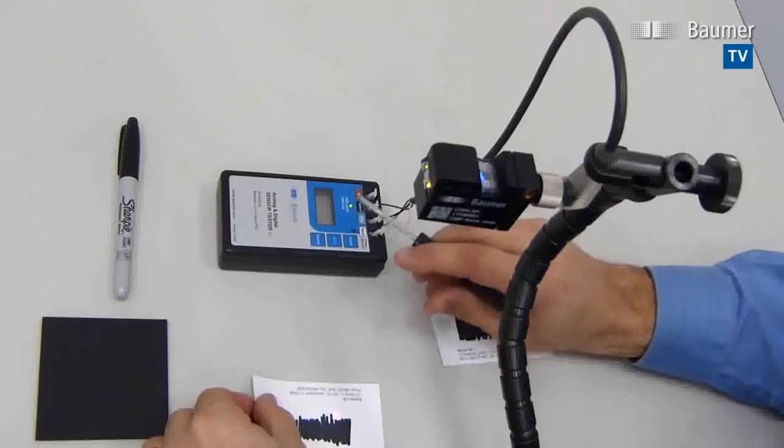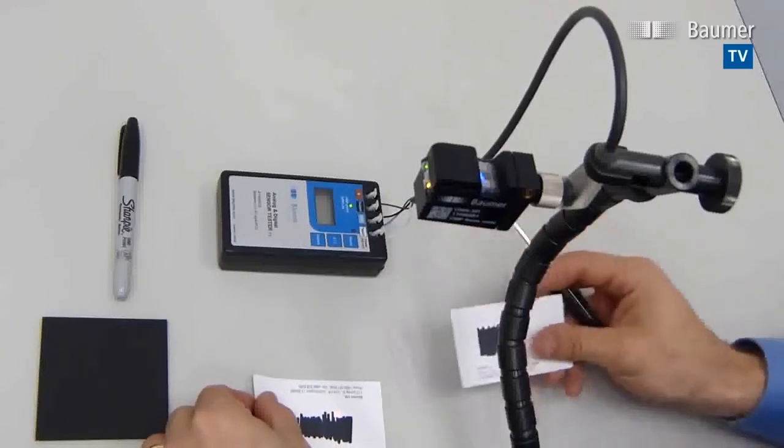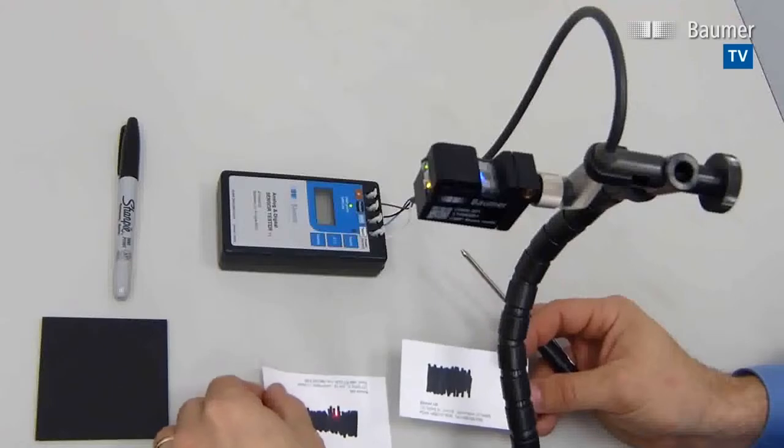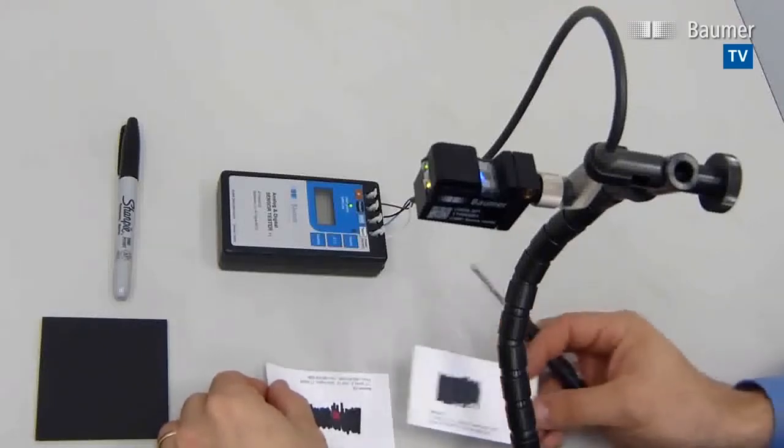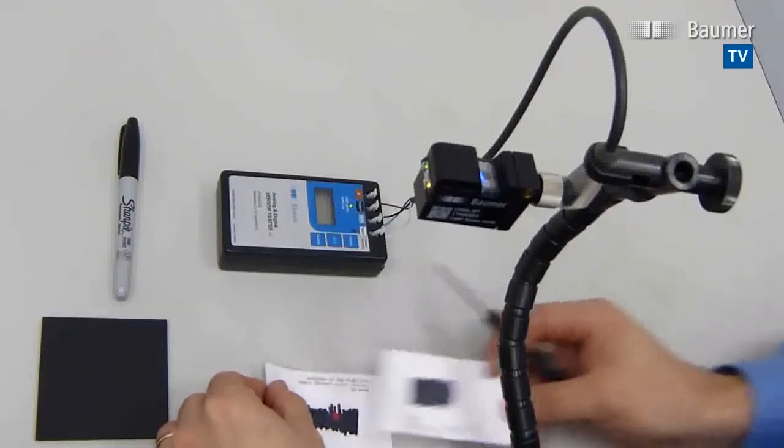You see that there's a green PNP output when the sensor sees its own light. So it's operating in a light operate mode.